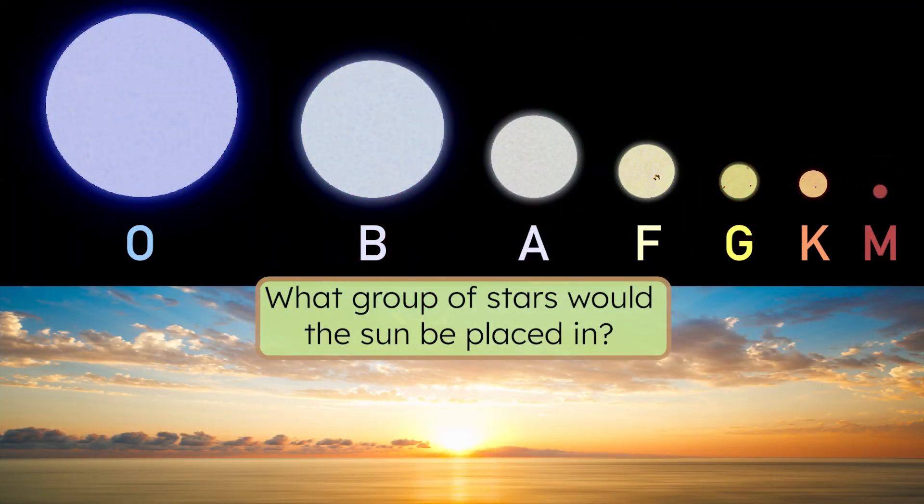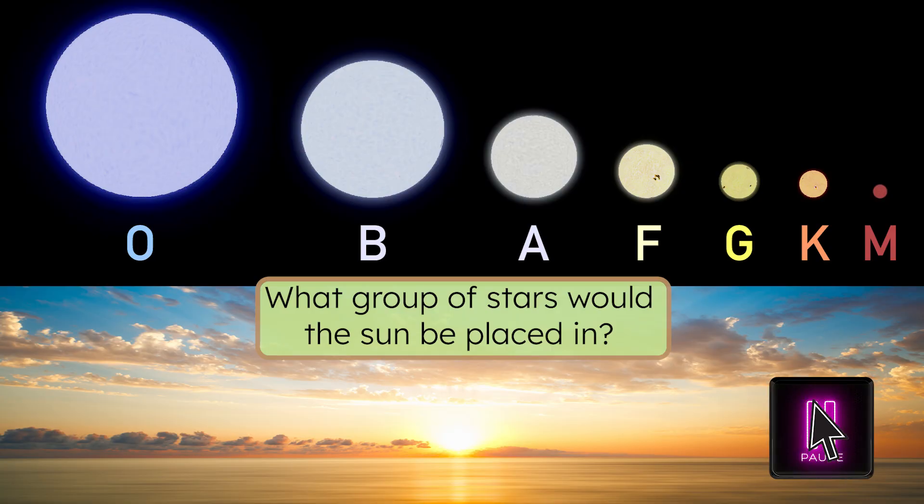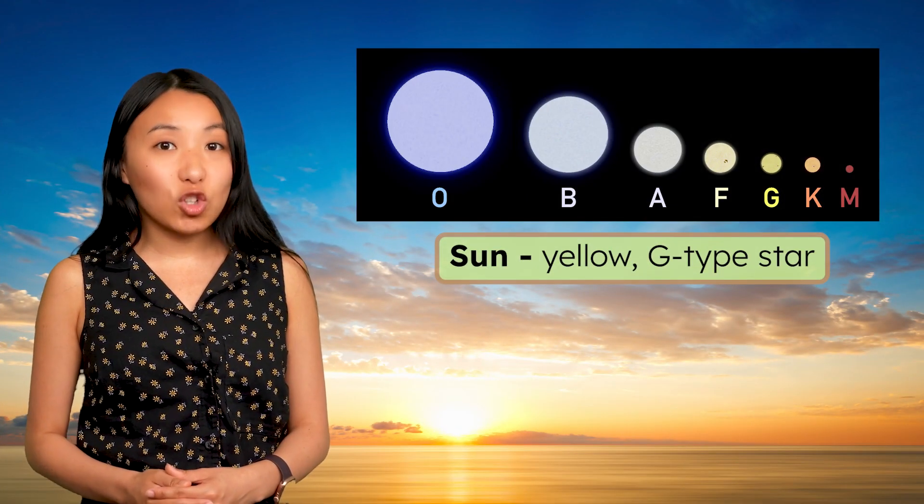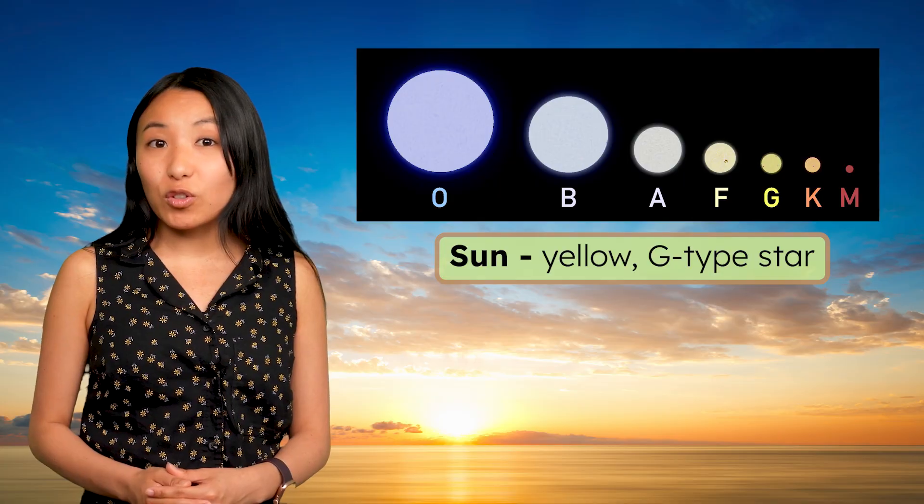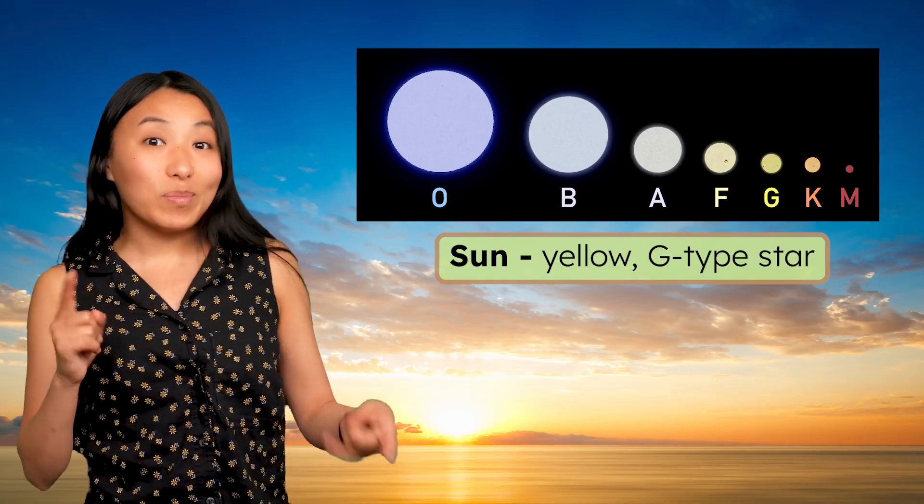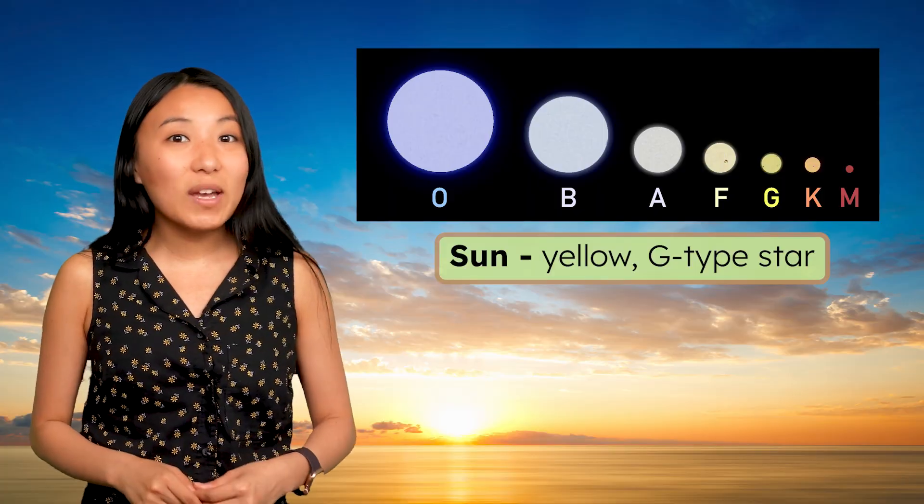So where do you think the Sun fits in? Think about the color it appears in our sky, as well as what you know about how it compares to other stars. Pause the video for a moment and predict the group you think it would most likely be placed in. Our Sun is a yellow G-type star. In the next few lessons, we'll learn more about its birth and eventual death. But right now, it's just busy living its life as an average main sequence star.